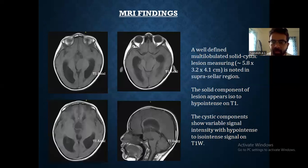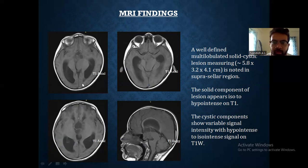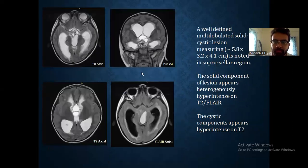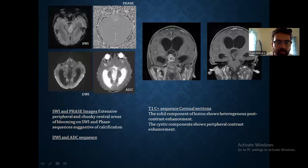Coming to the MRI findings: a well-defined multi-lobulated solid cystic lesion is noted in the suprasellar region. The solid component of the lesion appears iso to hypointense on T1, and the cystic component shows variable signal intensity, hypointense to hyperintense on T1. It appears heterogeneous on T2, and the cystic component appears hypointense on T2. SWI and phase images show extensive peripheral and central areas of blooming, indicative of calcification.